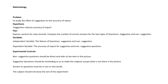The plan talks about how we are going to do the experiment. The plan here is: expose a picture for 60 seconds, then compare the number of correct answers for two types of questions — suggestive questions and non-suggestive questions. We are going to expose the picture to the participant for 60 seconds, take away the picture, then ask questions under two separate categories. Suggestive questions will have 10 questions and non-suggestive questions will have 10 questions.